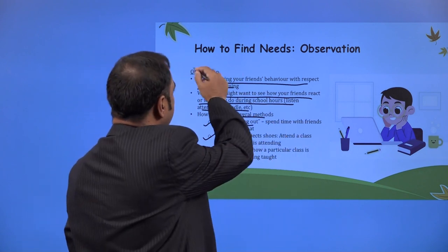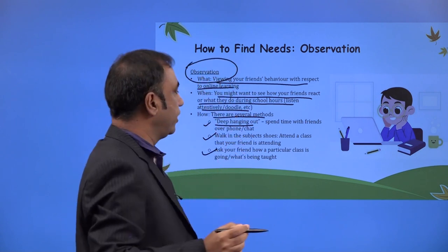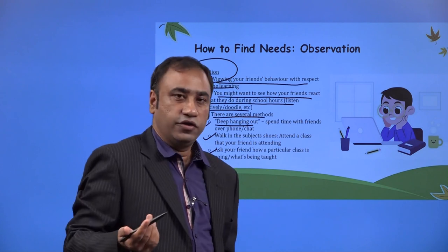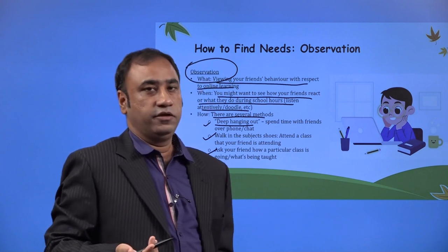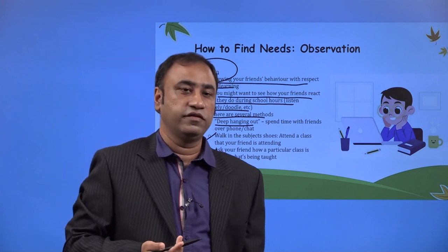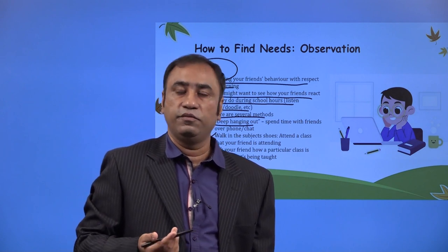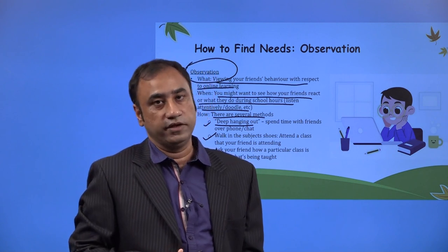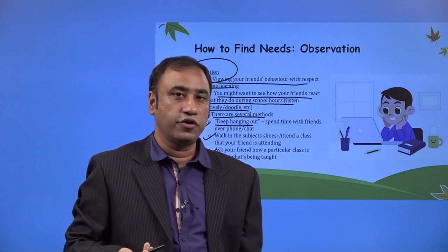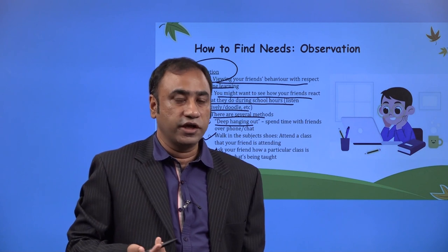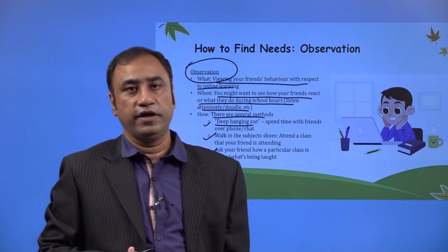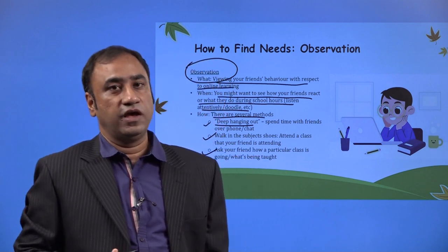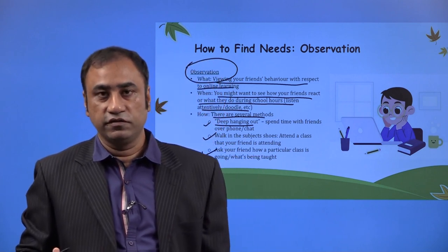These are the processes where you are actually observing a particular area — here we are talking about online learning. This kid can do that, and by doing this during the process, he or she may see that there is a gap where a product can fit in. While taking observations from friends, you can find a product opportunity that can fit in and you can introduce this product.